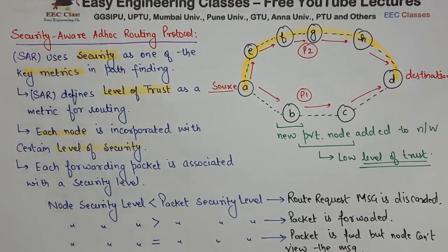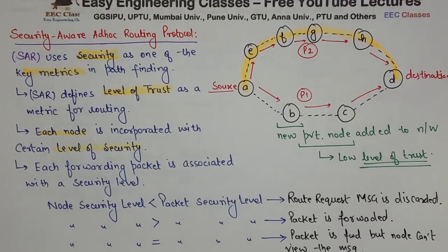So this is the Security Aware ad-hoc Routing protocol, where the level of trust is used as a security metric. This concludes this video lecture. Thank you for watching — please subscribe to my YouTube channel for more such tutorials.